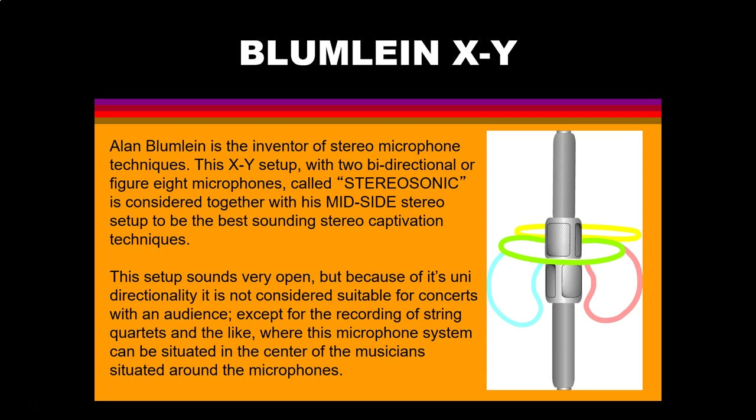The Blumlein XY setup was created by Alan Blumlein and is achieved similarly to the XY stereo, but uses two bi-directional or figure eight microphones instead of two cardioid microphones. This setup sounds very open because of its bidirectionality, but it is not considered suitable for concerts with an audience because it will also pick up the audience sound behind the microphones. It's often used in the center of orchestras to pick up instruments all around, and it is also used to record concert settings like orchestras when there is no audience in the room and you want to pick up the ambient room sound.